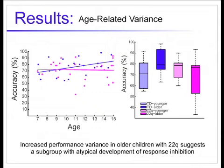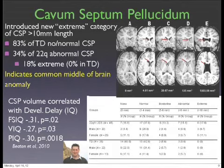Typical kids get better and better at withholding the response, but kids with the 22Q deletion don't improve. They're doing quite well — 70-some percent — but they're not using that monitoring to stop the behavior. They're impulsive even though they know they shouldn't be, and that's another thing that makes life a little more difficult.